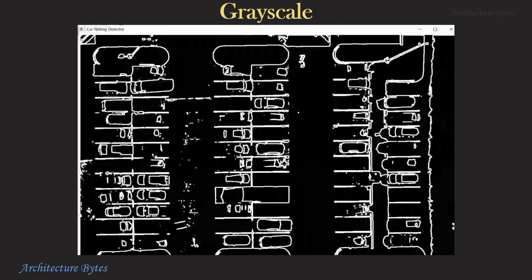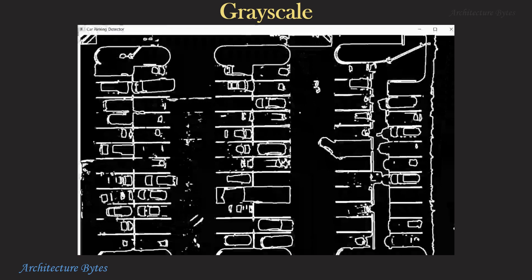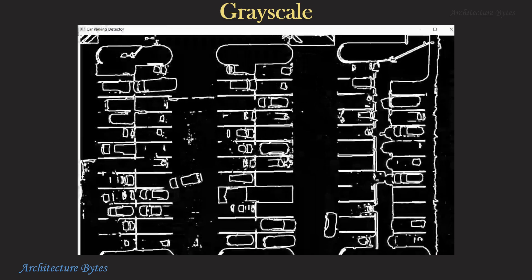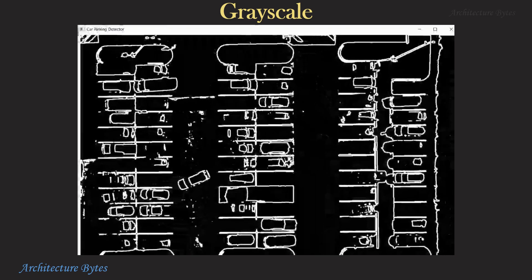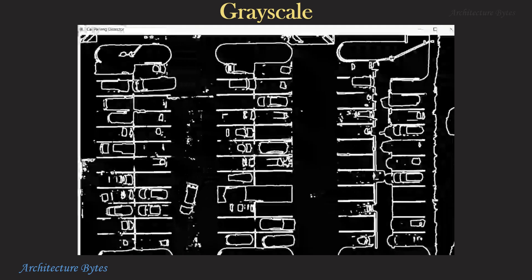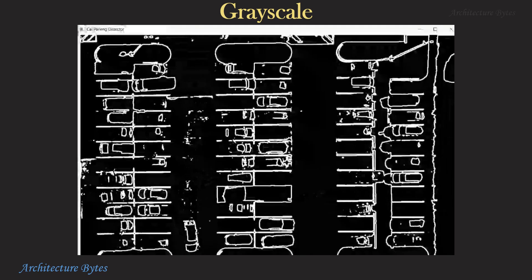Here is the same parking space video in grayscale. This simplifies the problem for us. The general idea is that the dark areas are free while the ones with white pixels are occupied. However, we need to focus on parking spots and not the entire area, so let us demarcate the parking spots clearly and then examine them.